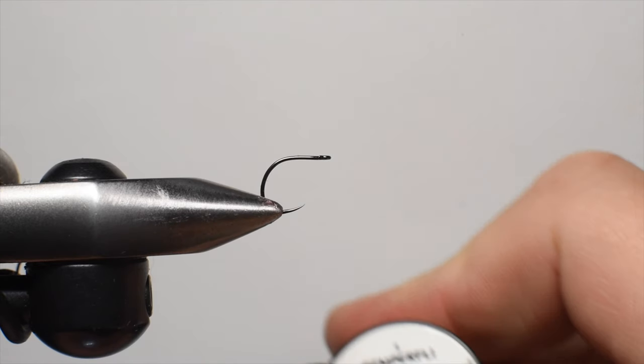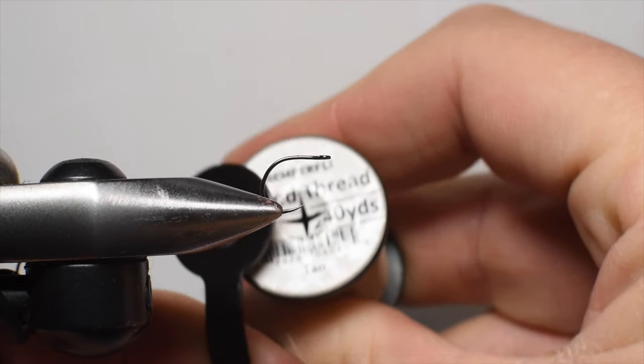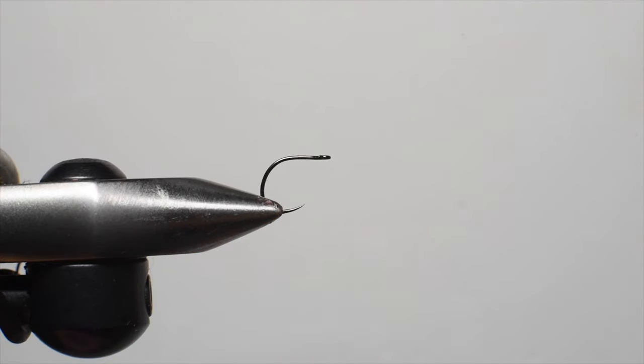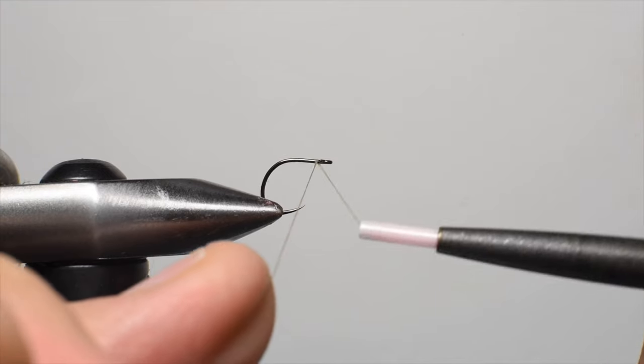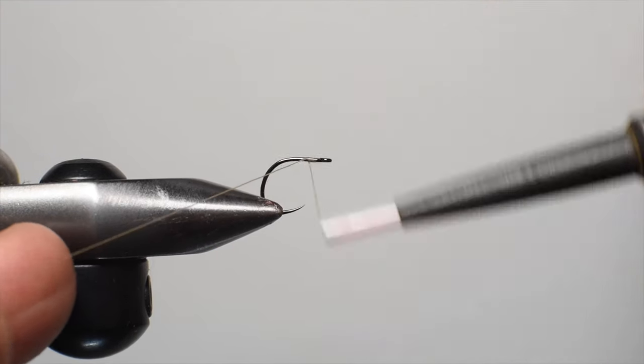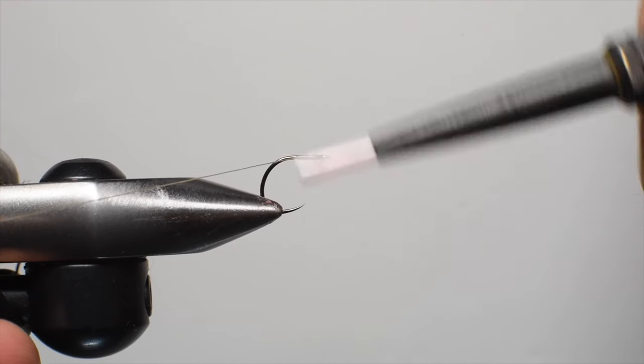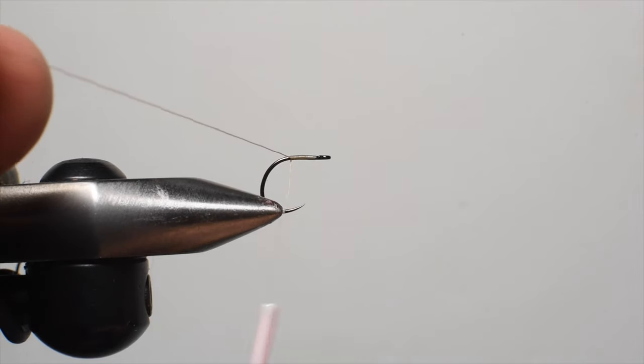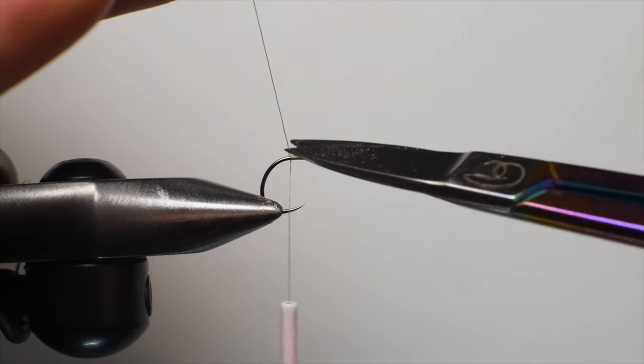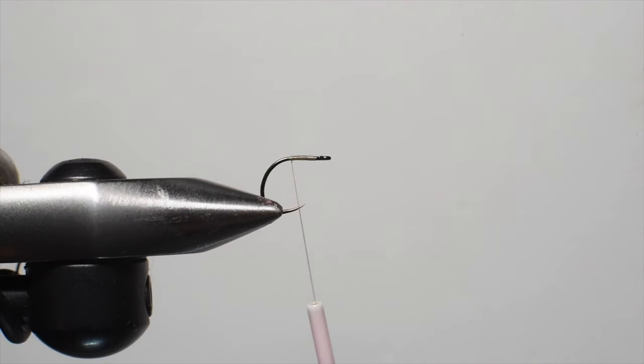We're going to start with putting some wax thread on the hook. This is an 8-0 in tan by Semperfly. We'll start this on the shank, get it started and get back to about the point of the hook. We'll cut out our tag end and then we'll begin tying in materials.